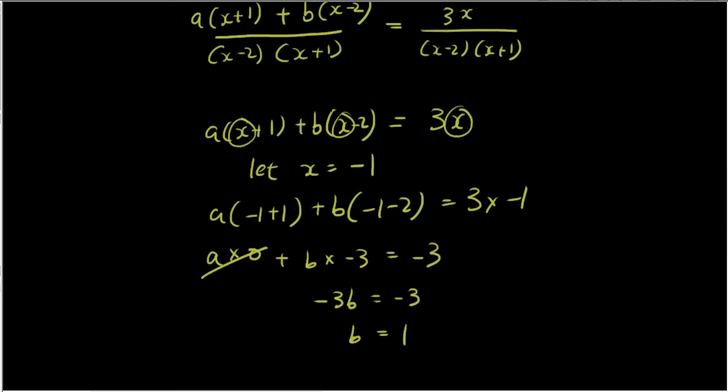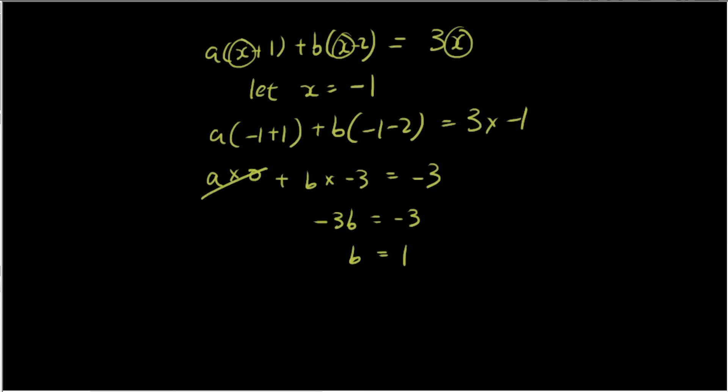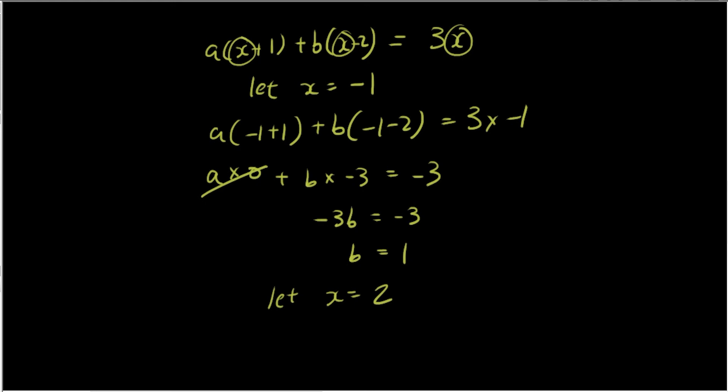That's really cool. So let's now find a. The reason I picked -1 is because I knew -1 + 1 would equal 0, and that will help me eliminate a. 0 helped me eliminate a. So now let's see if I can eliminate b by letting x = 2. Let x = 2 and that will help me get rid of b. So now I have a(2 + 1) + b(2 - 2) = 3(2). Every time x occurs I change it to 2.